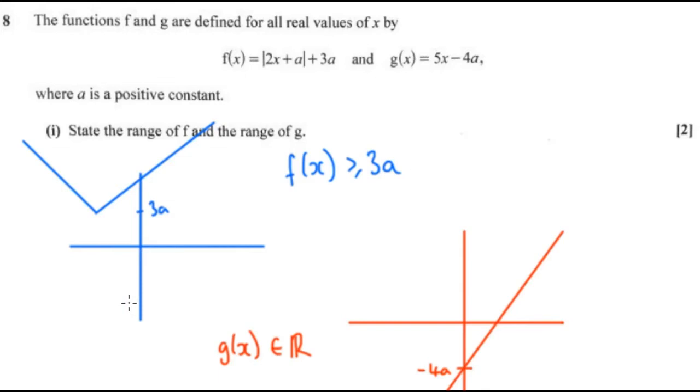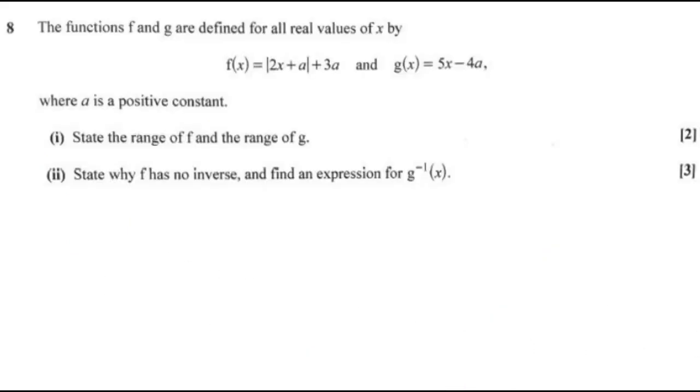You can't have an inverse with a many-to-one function. You can only have inverses for one-to-one functions. That's the reason why it hasn't got an inverse.